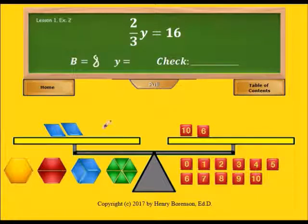To find out the value of y, we notice that three of the blue blocks are equal to the yellow block. So therefore the yellow block would be 24.